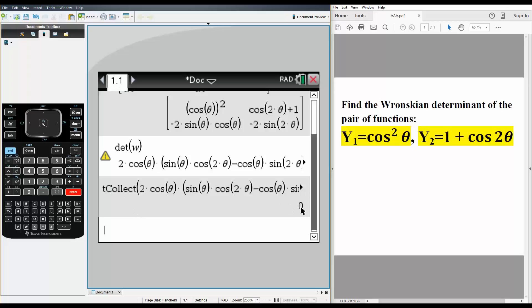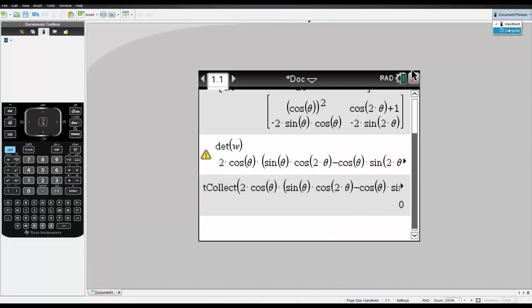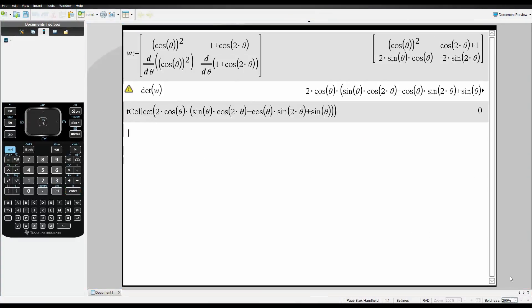And so the answer is 0. The Wronskian determinant for this problem is 0. If you missed this step, you could also expand what we have. That's all we need to do for this problem.